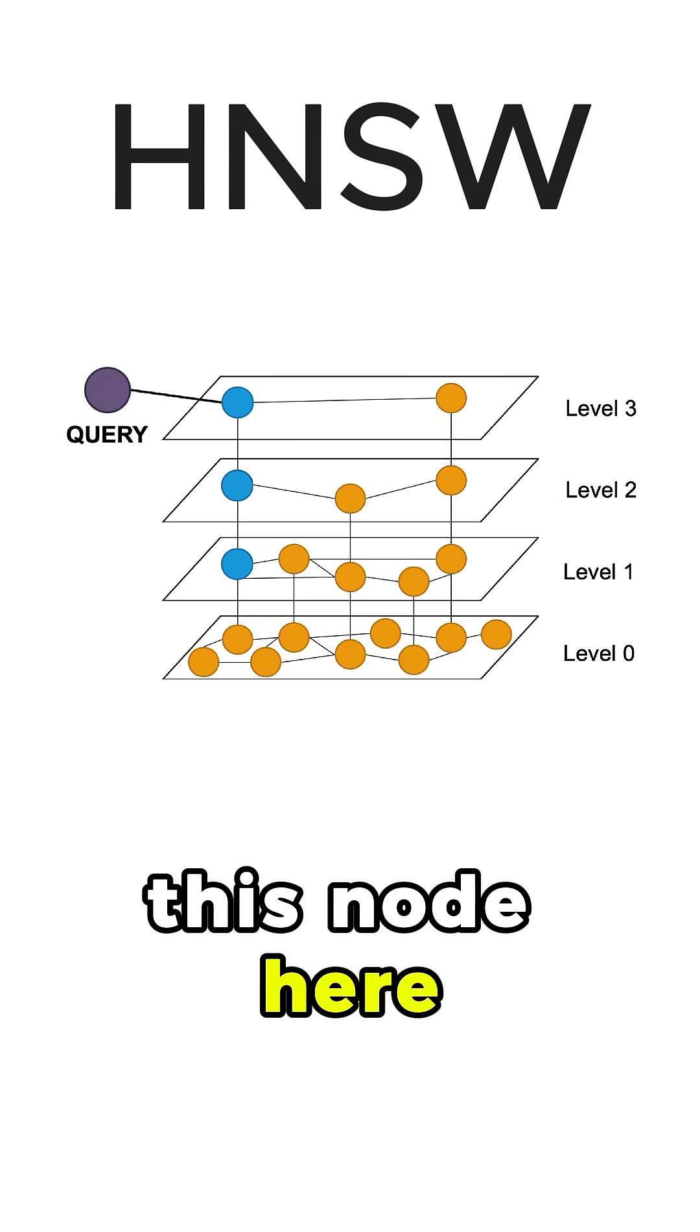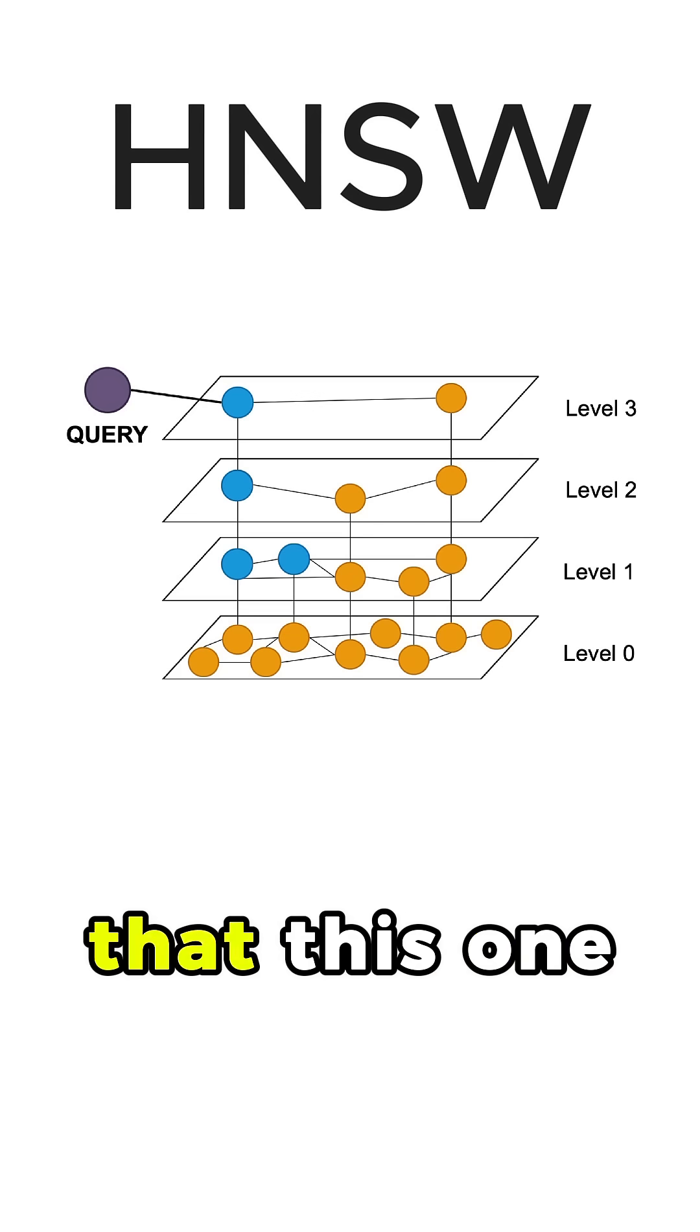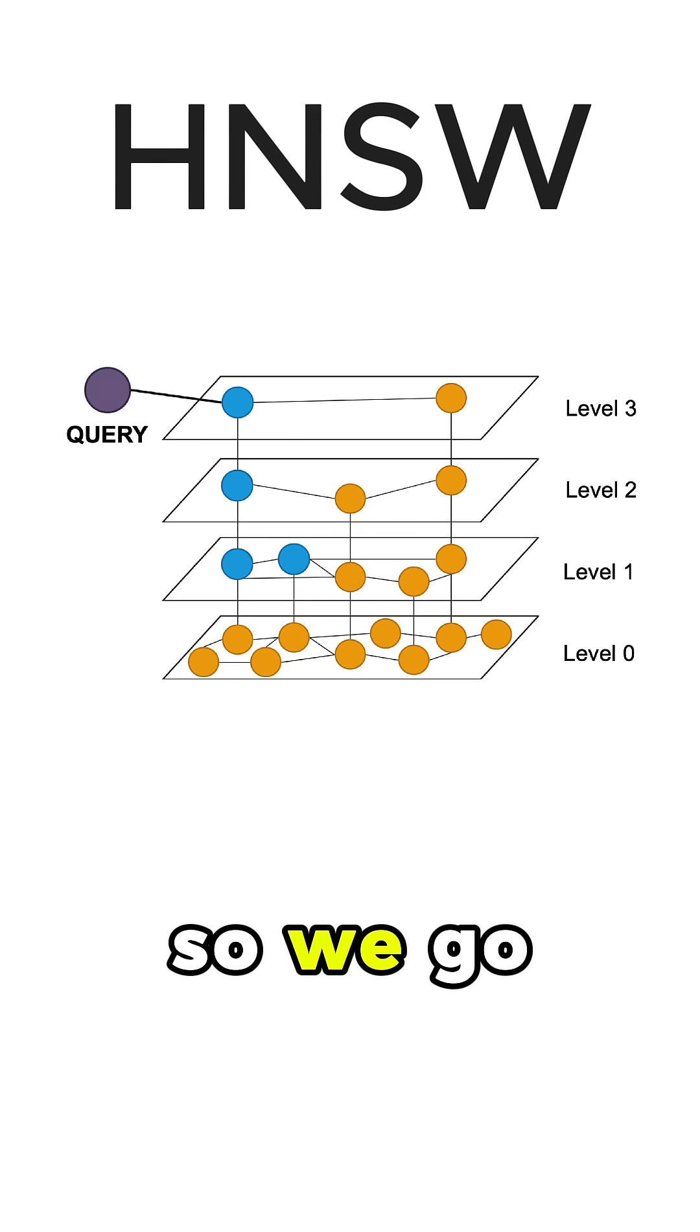Then we check this node here with all its neighbors and we see that this one is the closest one, so we go there.